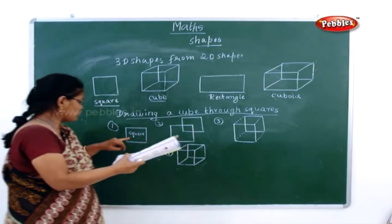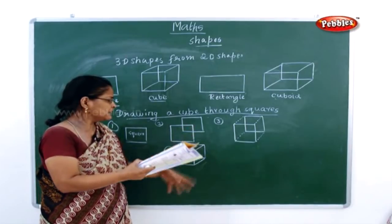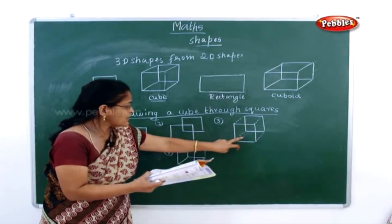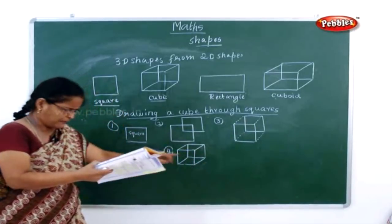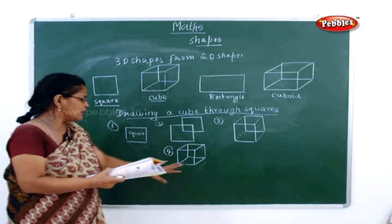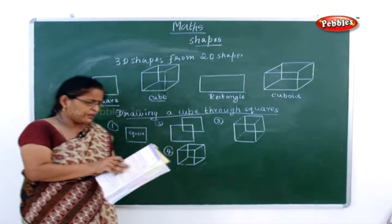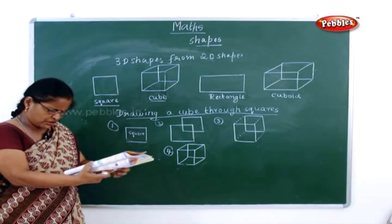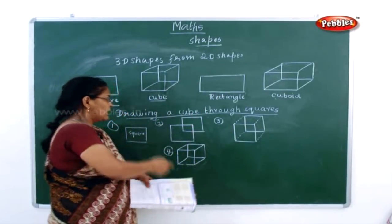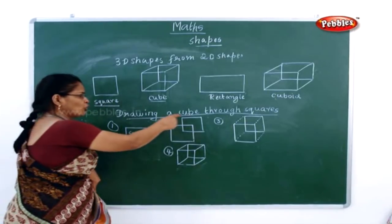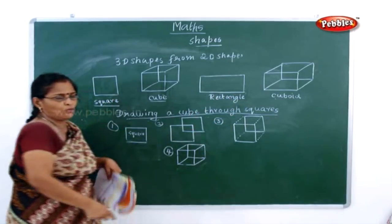So what is the first step? Just draw a square. Next, two squares like this. Third, draw dotted lines. Fourth, join the dotted lines and make a perfect cube. This is how you can draw a cube through squares. Using the same procedure with a rectangle, you can draw a cuboid.